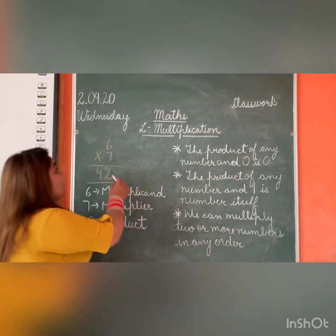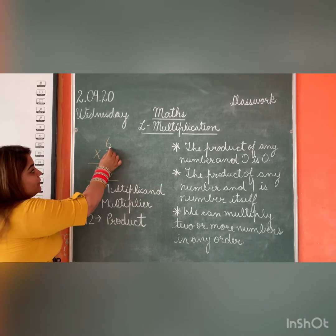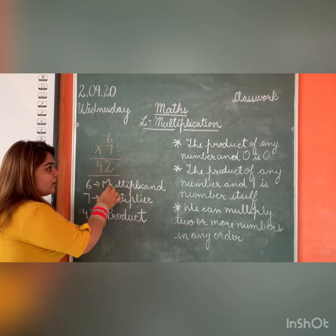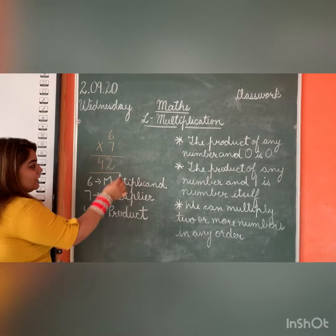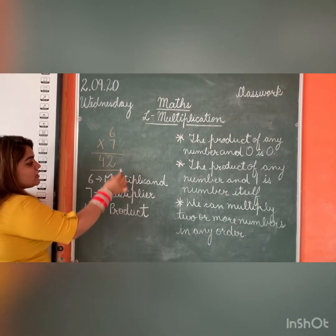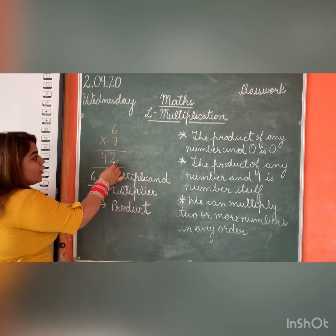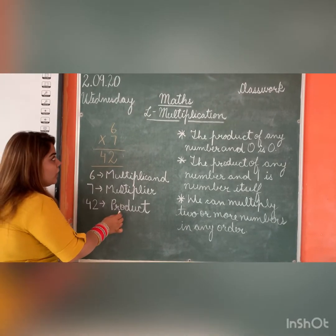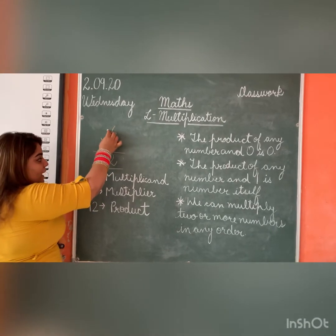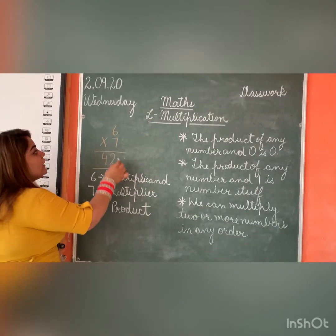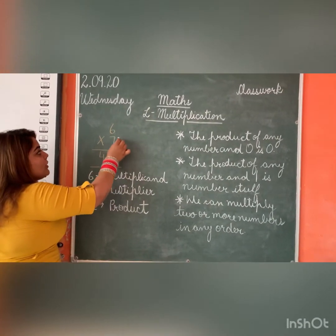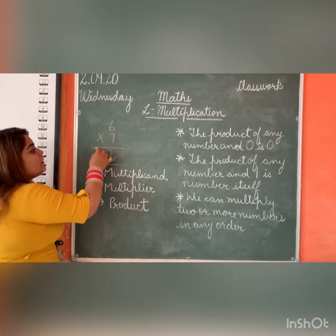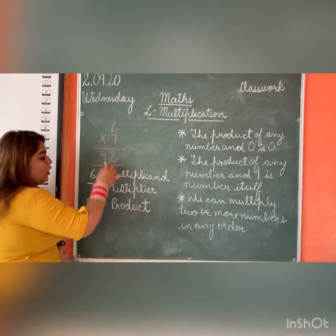See, when we have to multiply 6 into 7, we get a product of 42. As we have studied, 6 is the multiplicand, 7 is the multiplier, and 42 is the product. Again I repeat: the number which is to be multiplied is the multiplicand, the number by which we multiply is the multiplier, and the answer of the multiplication problem is called the product.